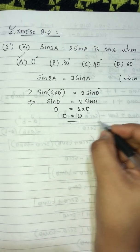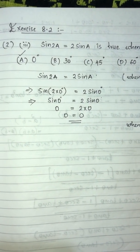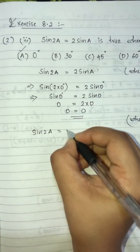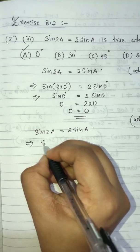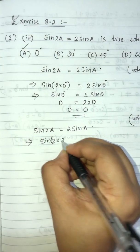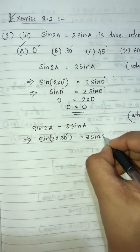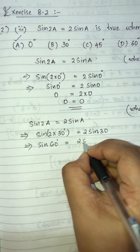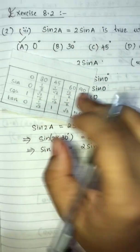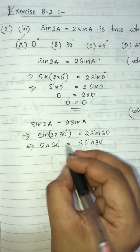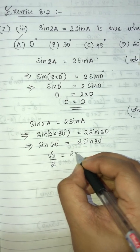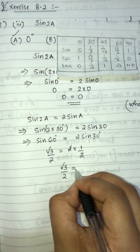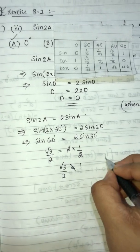Checking option B: a = 30°. sin(2 × 30°) = 2 sin 30°, so sin 60° = 2 sin 30°. sin 60° = √3/2, and 2 sin 30° = 2 × 1/2 = 1. Since √3/2 ≠ 1, option B is wrong.